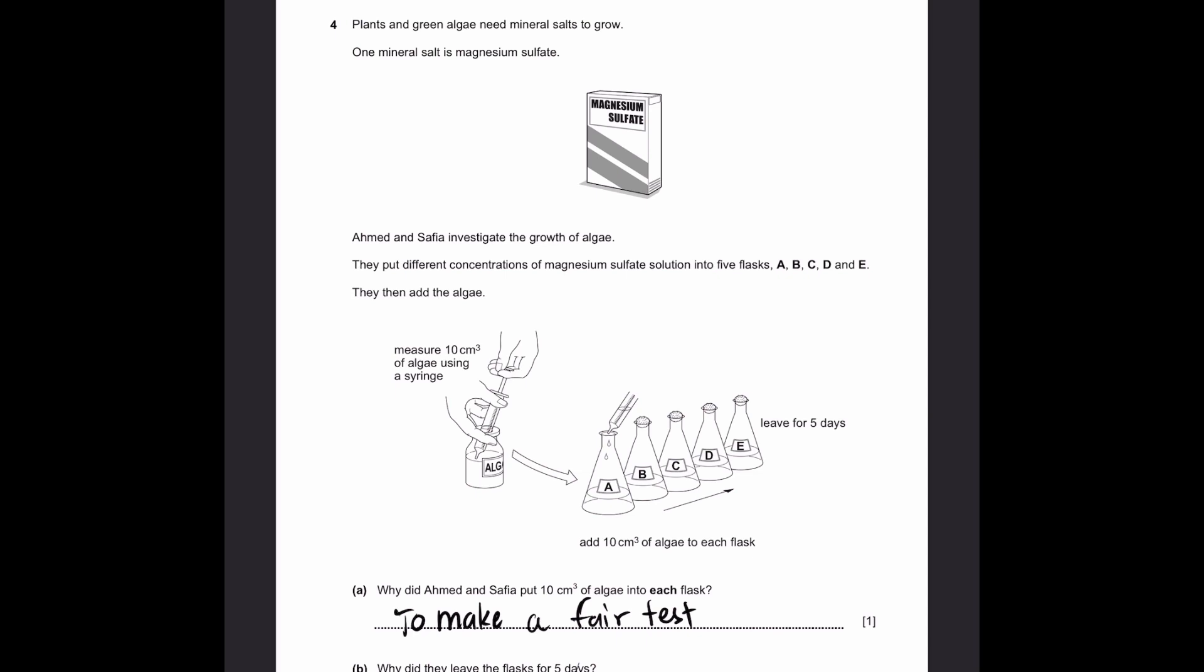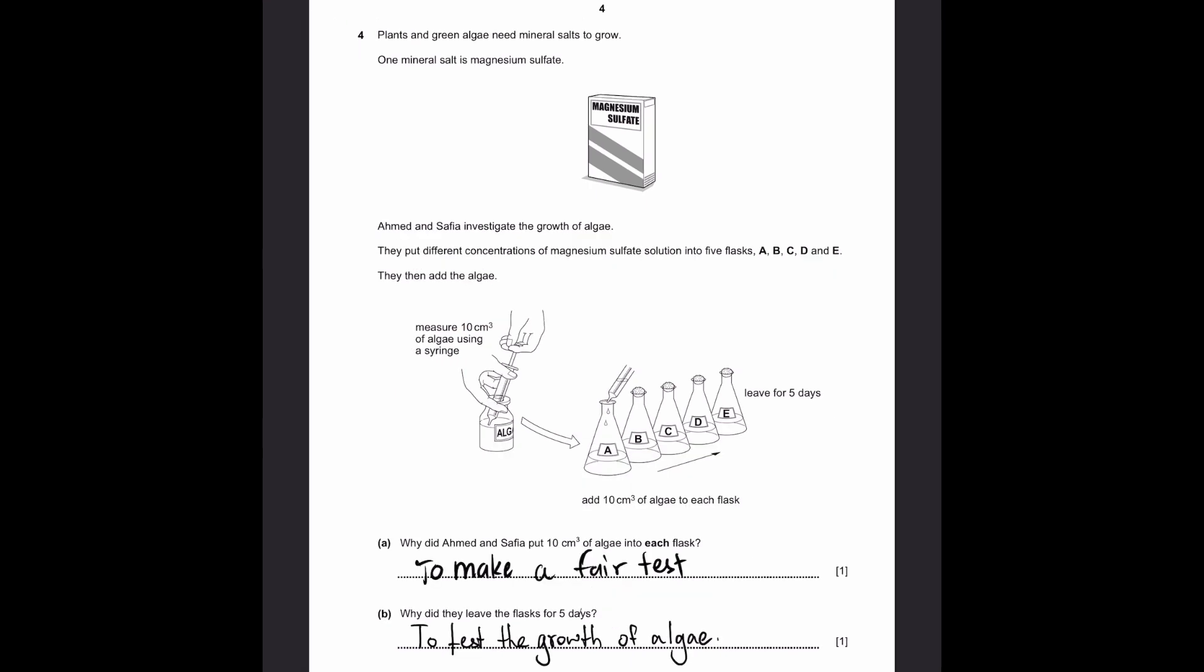Part A. Why did Ahmed and Safiya put 10 cm cube of algae into each flask? The simple answer is to make it a fair test, or in other words, make the results reliable. This volume of algae is a control variable so the test is not unfair.